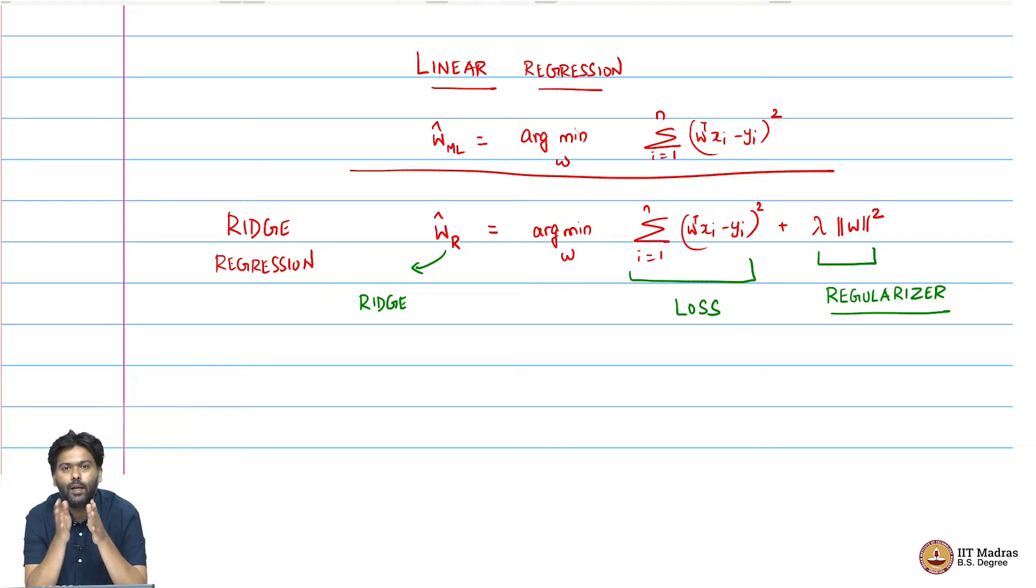But what does the prior itself tell us? If we say the prior is 0 mean, it means we are somehow thinking we want w's whose length is as small as possible. We want w's to be close to zeros. The maximum probability, the mode of the distribution, is at 0.